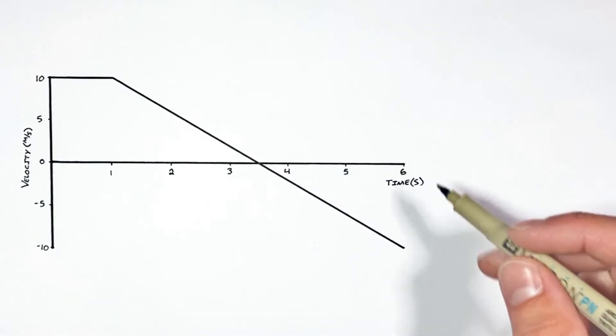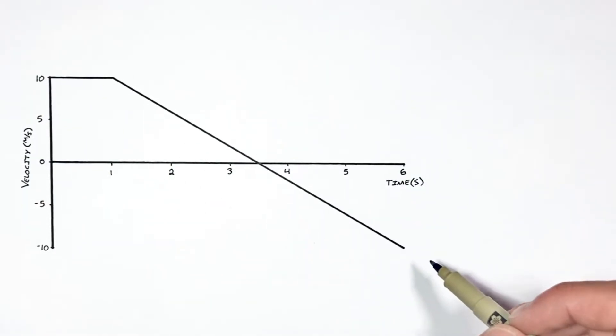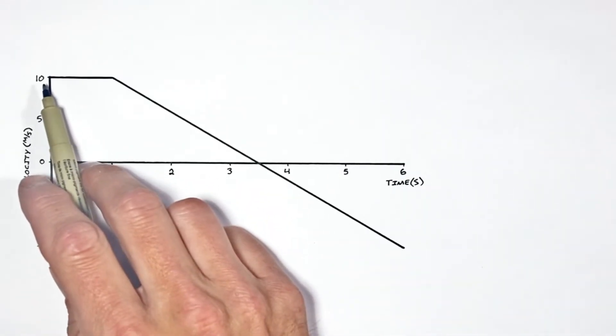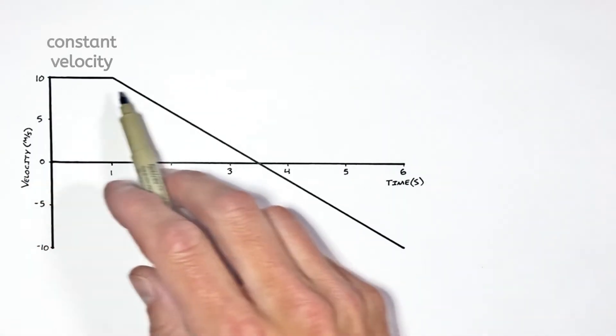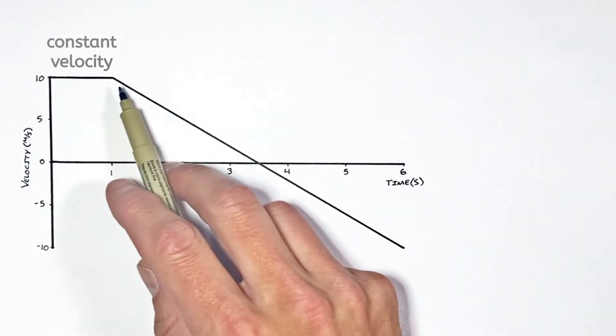Now before we get into the equations here, we need to talk about whatever this object is actually doing. You see at first this object is moving along with a constant velocity, meaning it's not speeding up or slowing down. It's just cruising along at 10 meters per second.